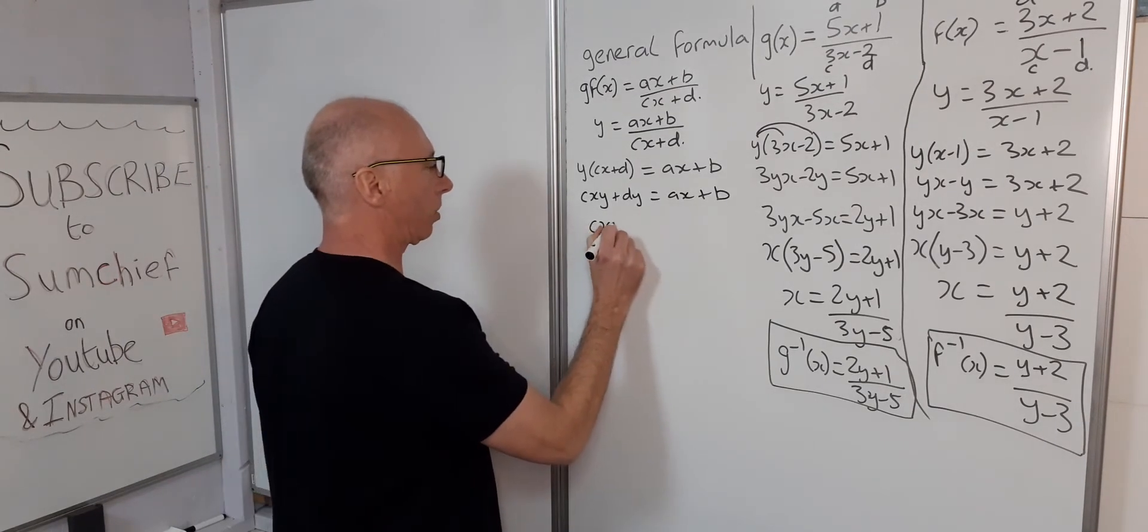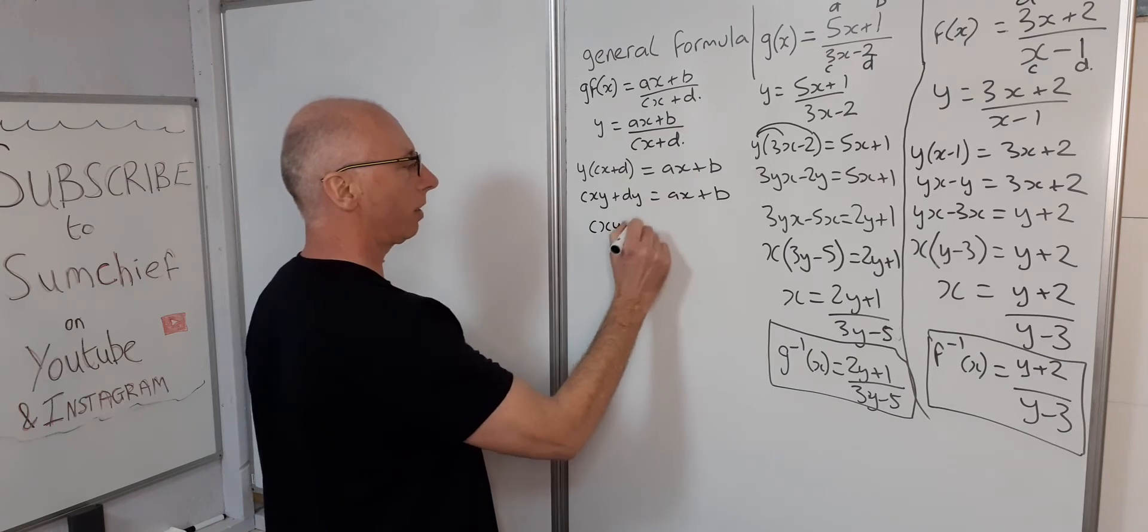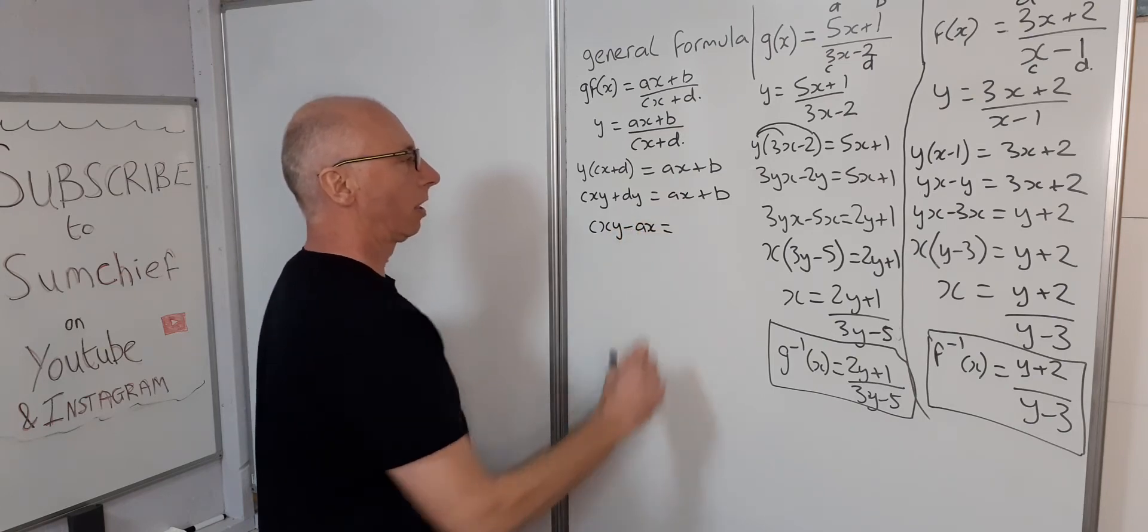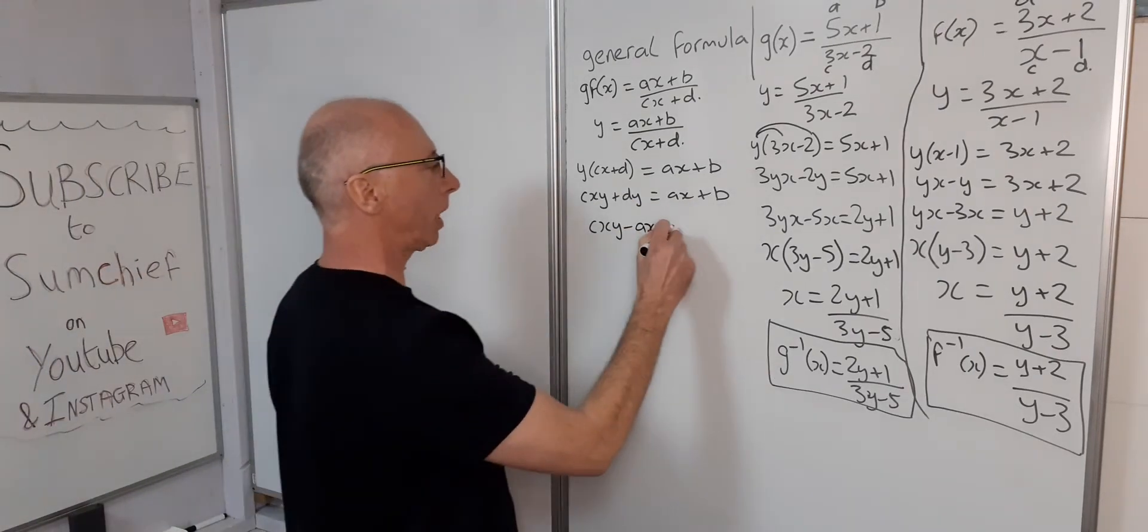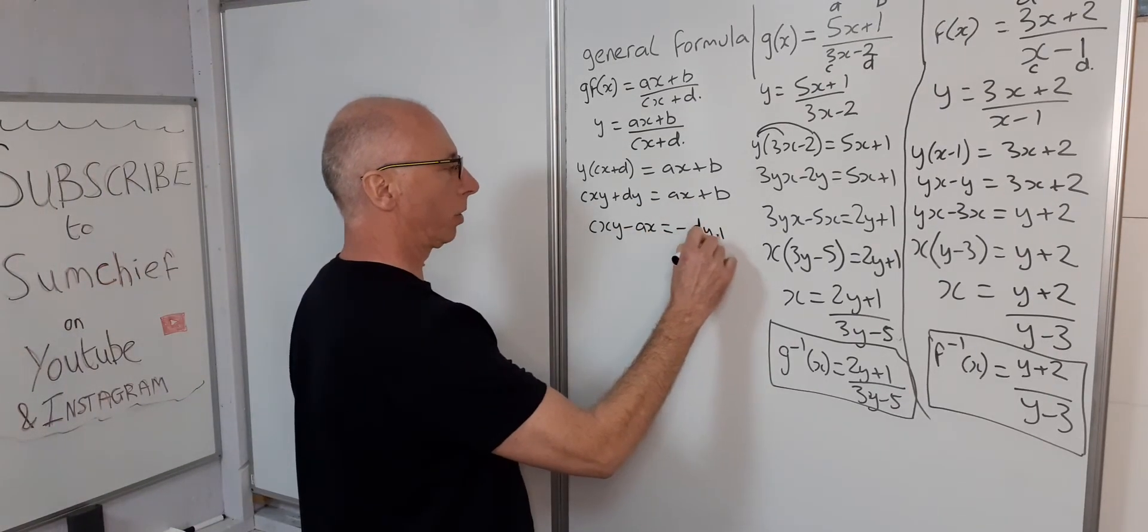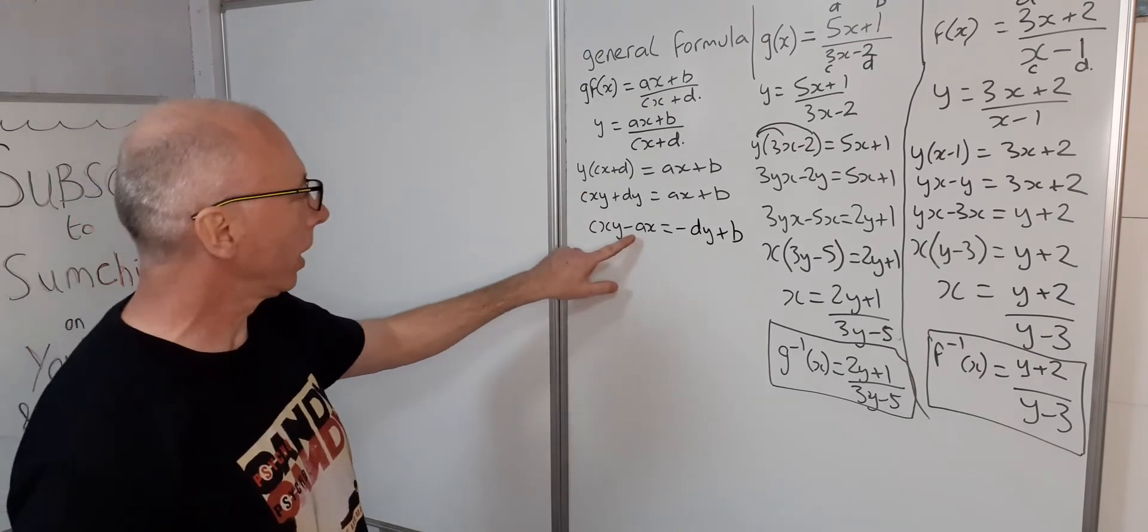So cxy, bring this one on this side becomes minus ax. dy over this side becomes minus dy plus b. Okay, right, now we're in good position here.